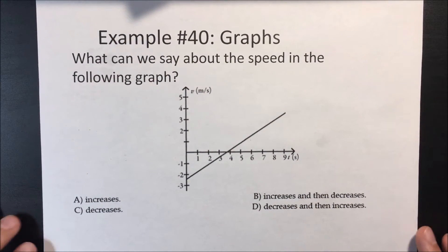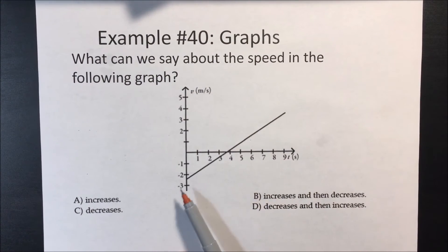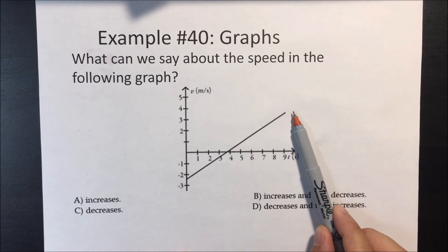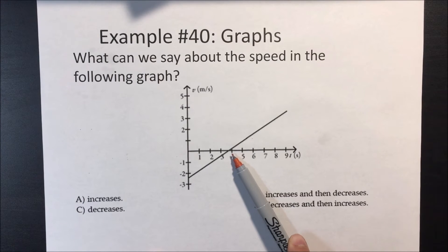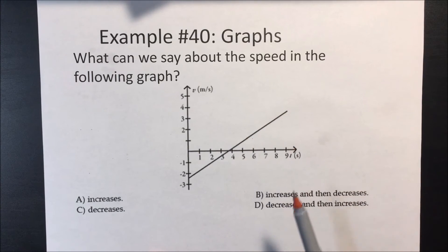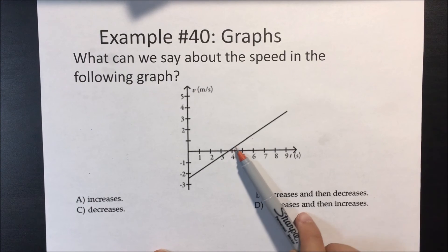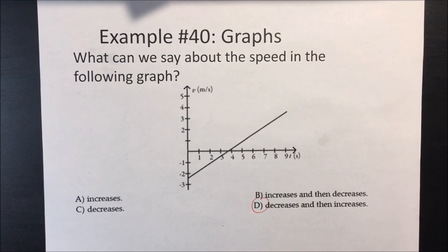On to our last problem. What can we say about the speed in the following graph? This is a velocity versus time graph. We see it starts at a speed of negative 2.5, goes to 0, and then goes to 4 meters per second. So it's going from negative 2.5 to 0 at the beginning, then 0 to about 4. The speed decreases to 0, then increases to 4 meters per second. So the speed first decreases, then increases. Thank you for doing this chapter — great job, and I hope you enjoyed the story of Cindy and Jim.